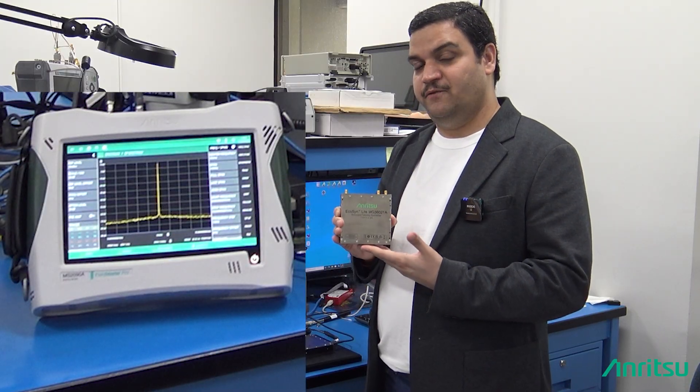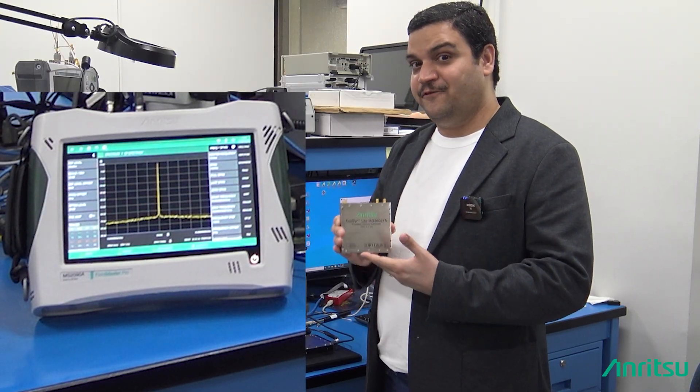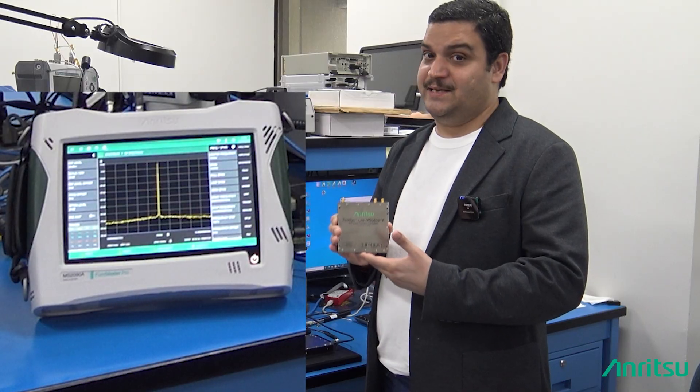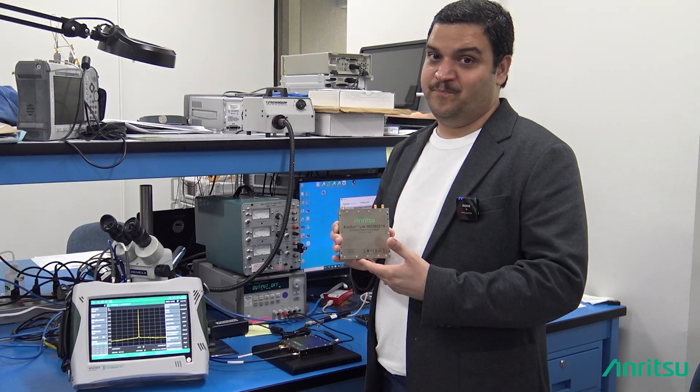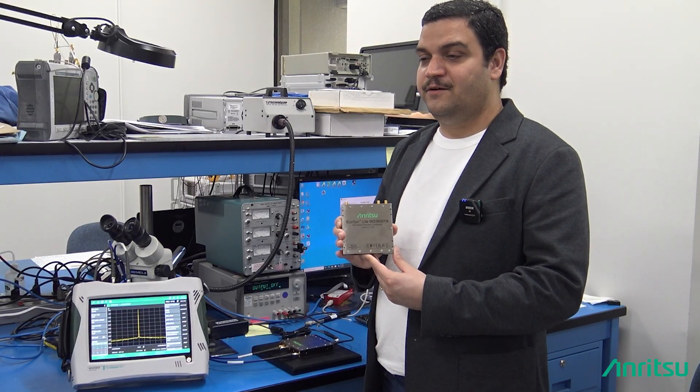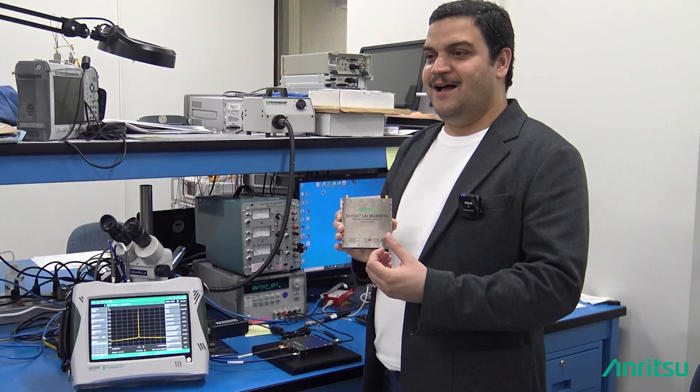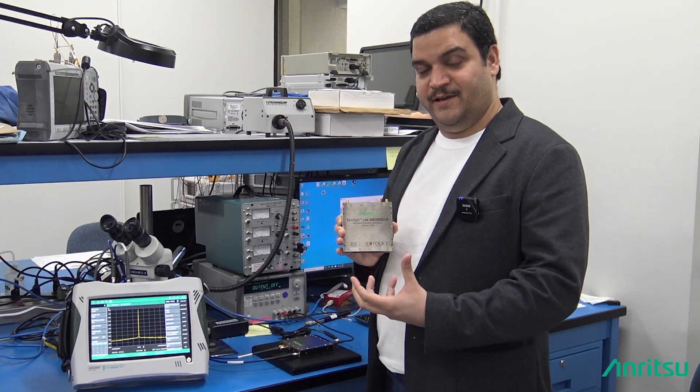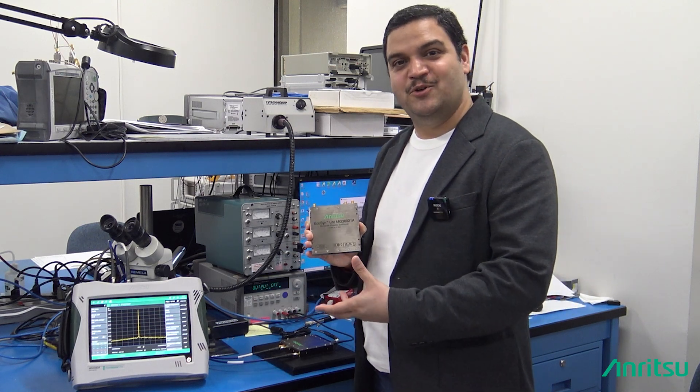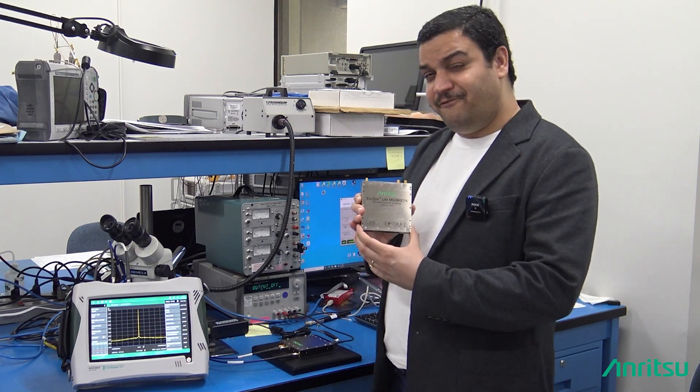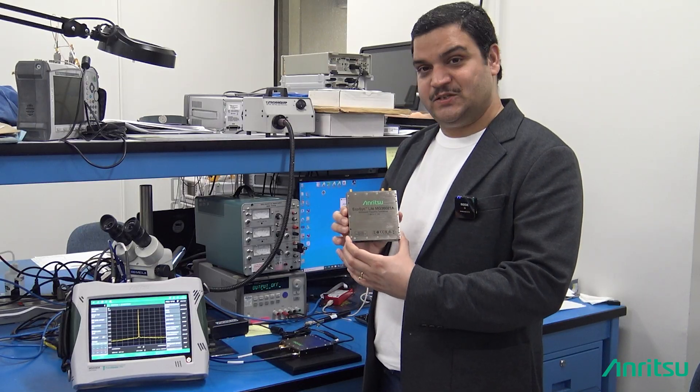The specification for this product for phase noise is minus 126 dBc per hertz at 10 gigahertz at 10 kilohertz offset. That is really good for a very precise clock. When you talk in terms of jitter, phase noise is equal to jitter in time domain, so you're getting a very good clock in this small form factor.